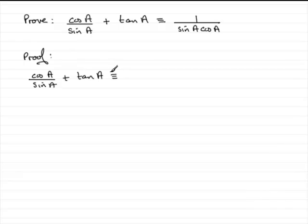And secondly, I see no tans in this answer over here. So I kind of want to think that maybe I should change tan A into something else that we should know. You should be familiar with the identity that tan of an angle is equal to sine of an angle divided by the cosine of the same angle.